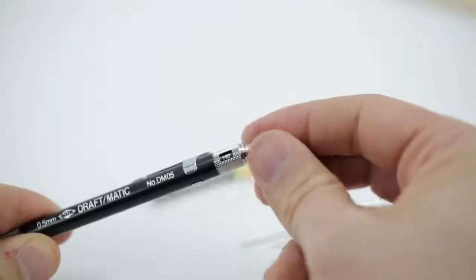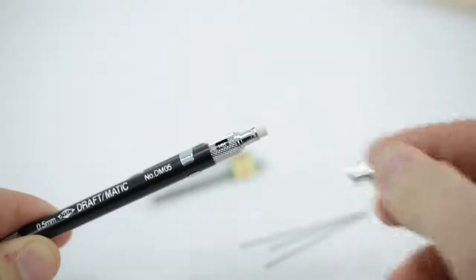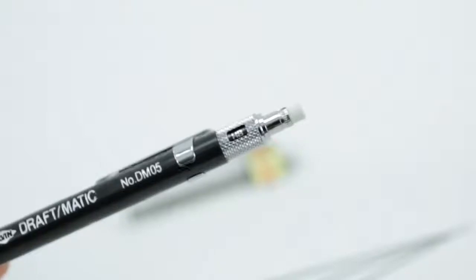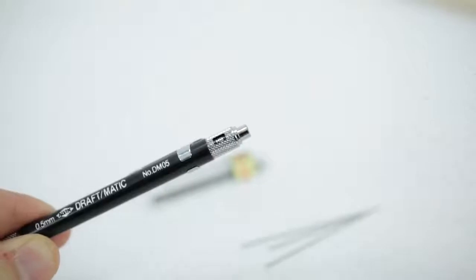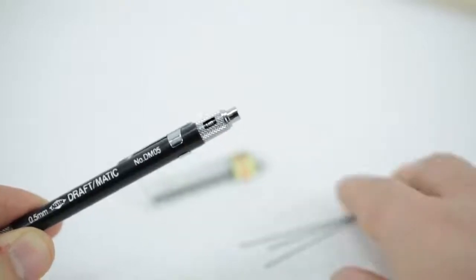When you need to add additional lead to your pencil, remove the cap on the end. Under that, in certain models, you'll find an eraser. Pull that out, and you'll see an opening to the inside of the barrel.